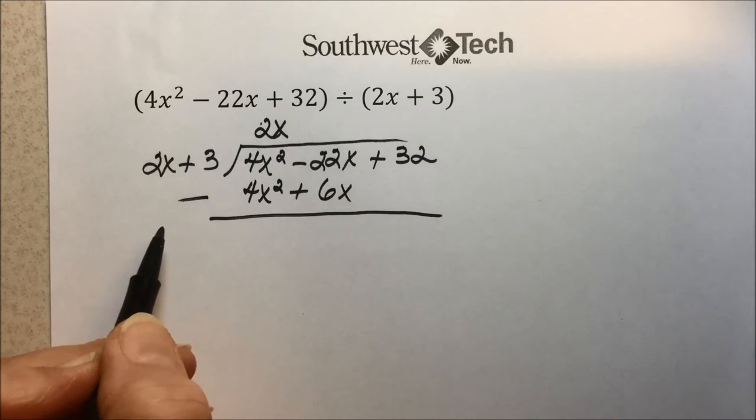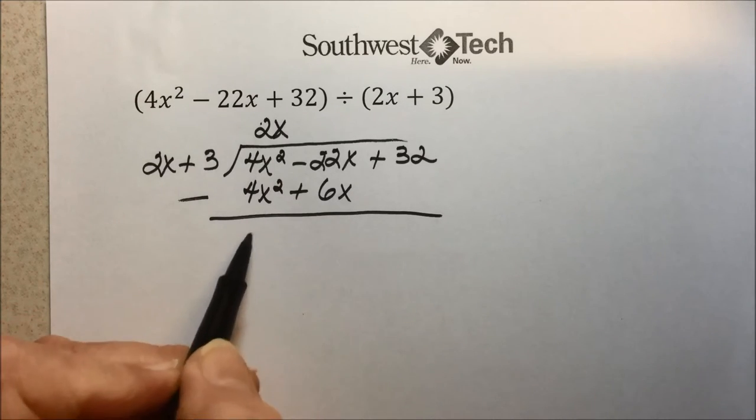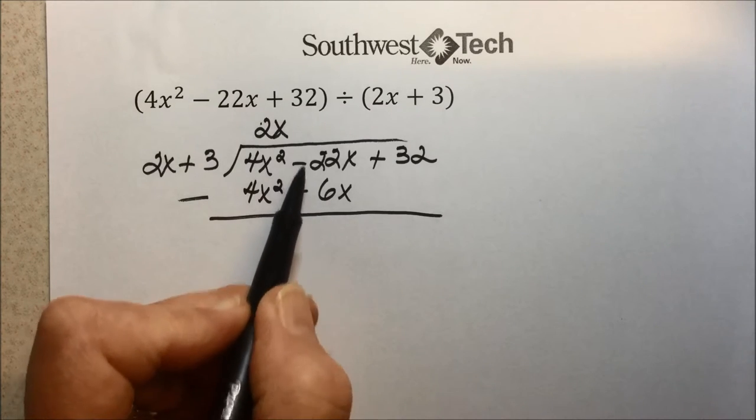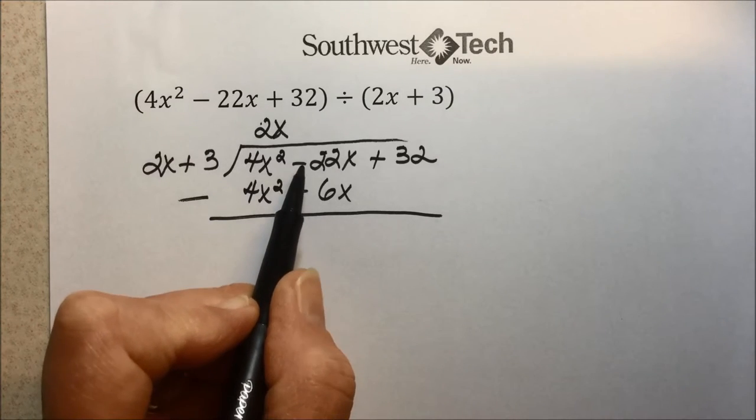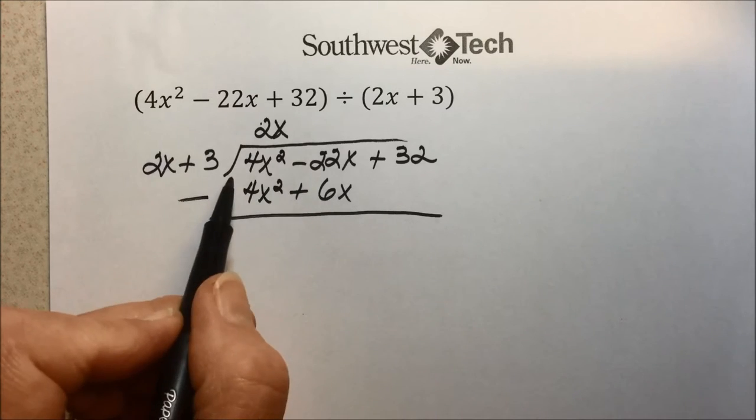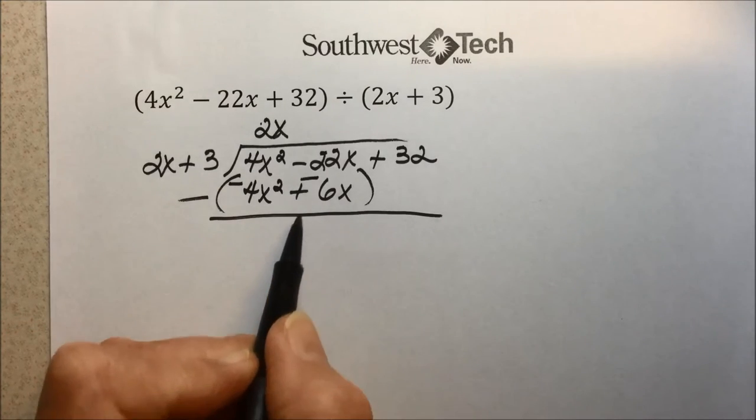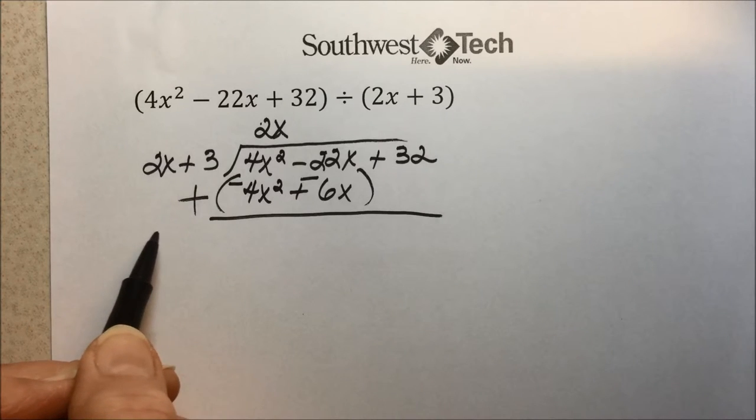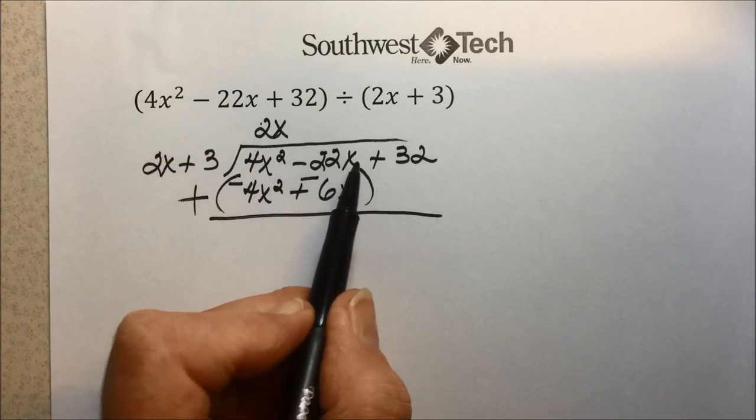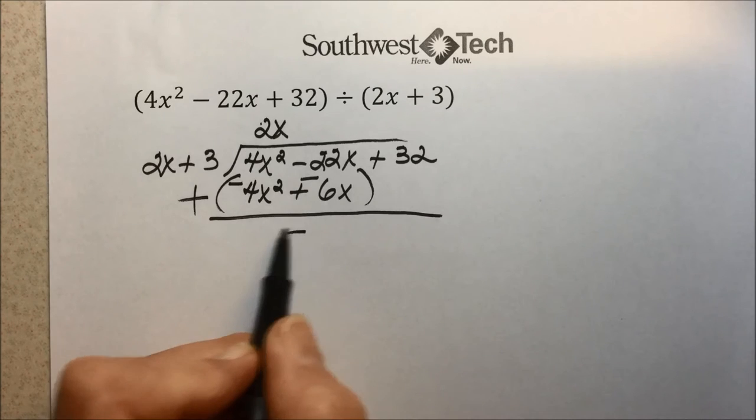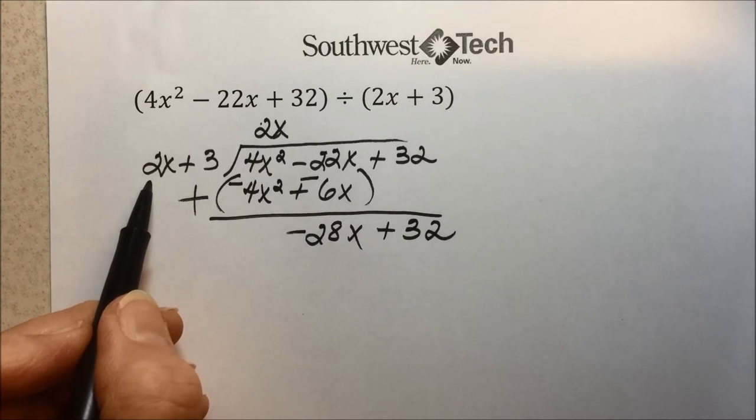In the long division, we're ready to subtract. Again, you might remember 4x squared minus 4x squared is canceled out, but you might just drop down here and treat this as a plus 6, when in reality it's subtract this 6x along with the minus 22x. So my suggestion is instead of subtracting, change the signs to the opposite of what they are, and then add, which is applying the rule of subtraction. 4x squared plus negative 4x squared is gone. Negative 22x plus a negative 6 is actually a negative 28x. We're now ready to bring down the next quantity and go back for our next value.